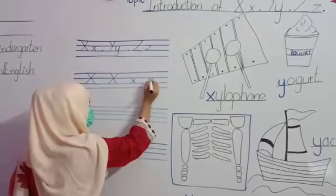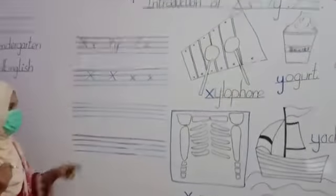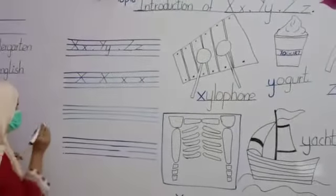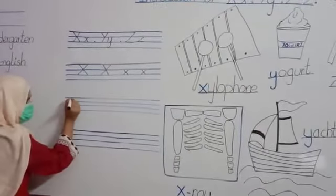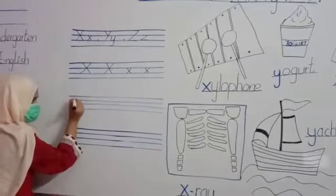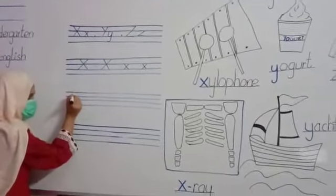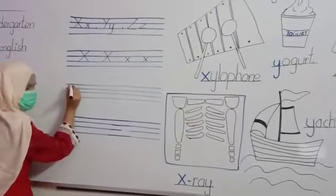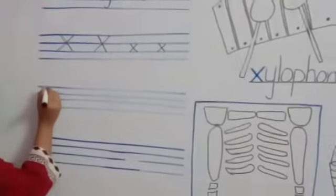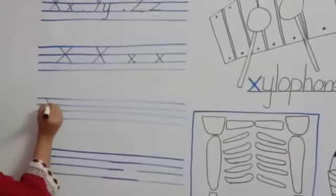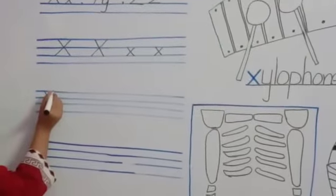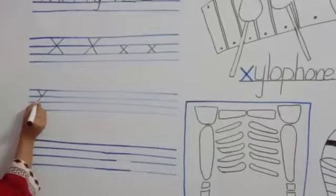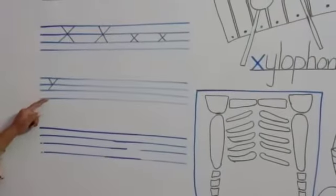Letter Y. First we make one slant line in the upper two lines. Then opposite, from line one to line three, make another slant line. This is letter Y.